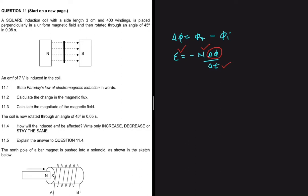Using the first formula, if we change the angle, there will be a change in magnetic flux, so we use magnetic flux final minus magnetic flux initial. Now let's look at the information in this question. We are told that we have a square induction coil with a side length of three centimeters, so we can calculate the area of that square.